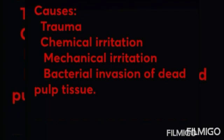The causes for this condition are trauma, chemical irritation, mechanical irritation, and bacterial invasion of the dead pulp tissue. The pulp tissue is solidly enclosed and no drainage is possible. The infection continues to extend in the direction of least resistance — through the apical foramen — and thereby involves the periodontal ligament and periradicular bone, because there is no drainage for the pus.